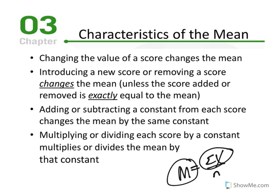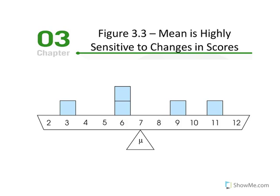Similarly, if we multiply or divide every score by a constant, we should expect a change in the mean. The sum of X changes because we're changing the values of X, and if the sum of X changes, the mean of the distribution also changes.